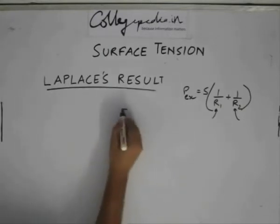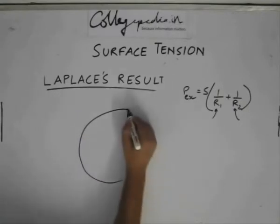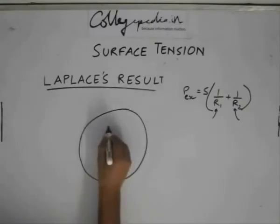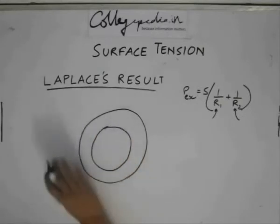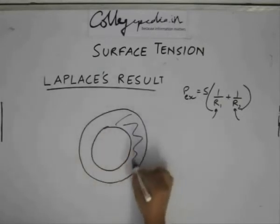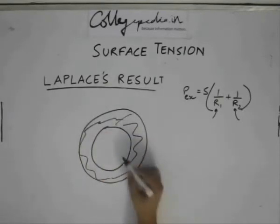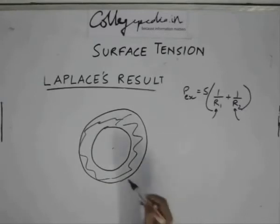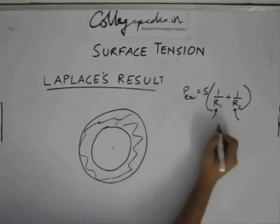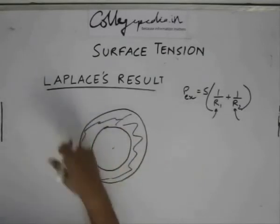Let us consider a soap bubble. This is filled up with soap and water solution here. Here we have some excess pressure. In this case, what we do? We use the Laplace's formula for two different spherical surfaces.